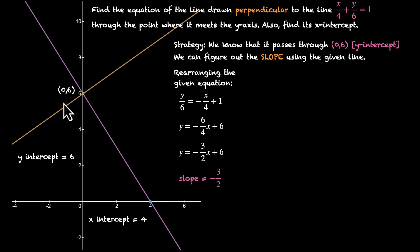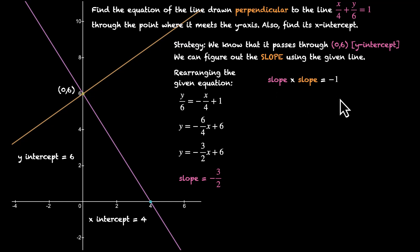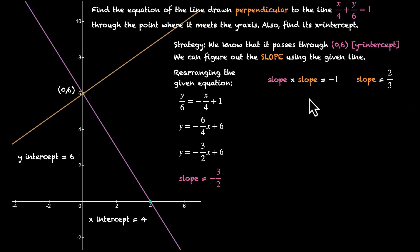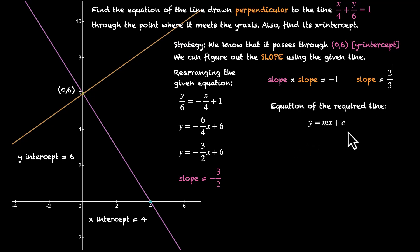Perpendicular lines have slopes whose product equals minus 1, so the slope of the perpendicular is the negative reciprocal of minus 3 over 2, which is positive 2 over 3. We have the slope m equals 2 over 3 and the y intercept c equals 6. Using slope intercept form y equals mx plus c, the equation is y equals 2 over 3 times x plus 6. Rearranging: 2x plus 18 equals 3y, so 2x minus 3y equals minus 18.